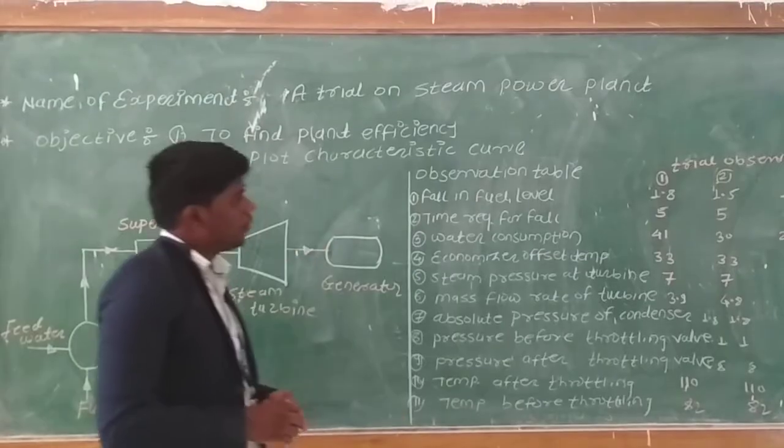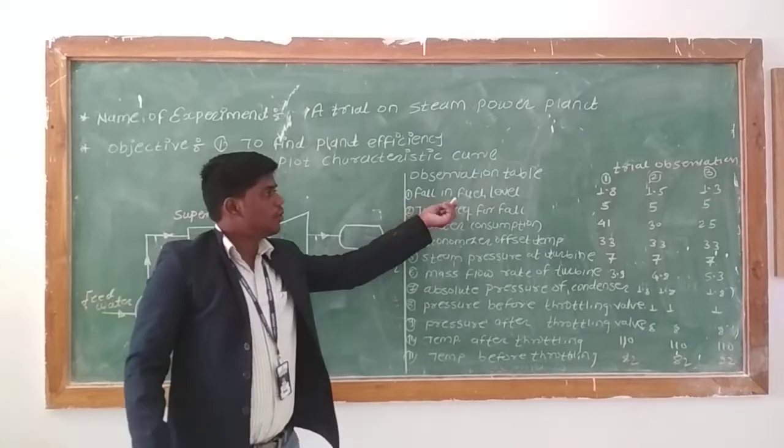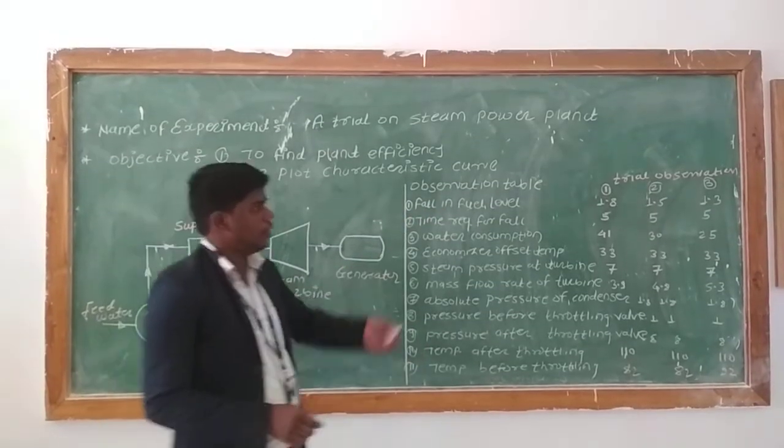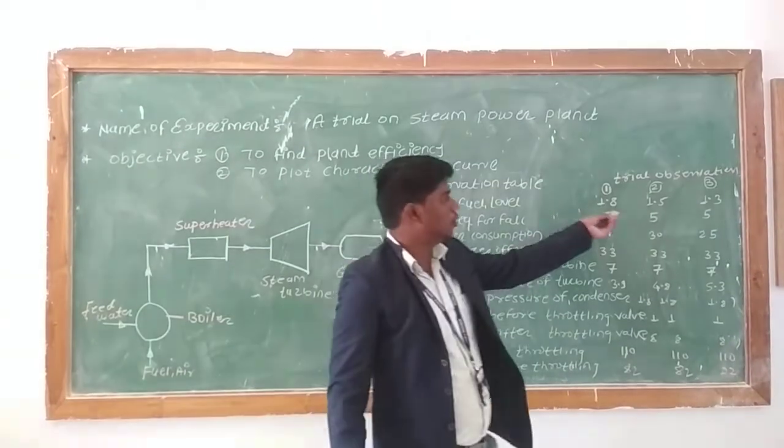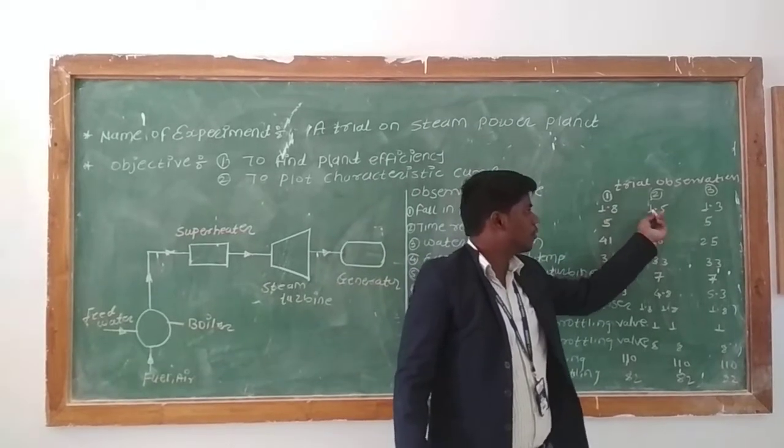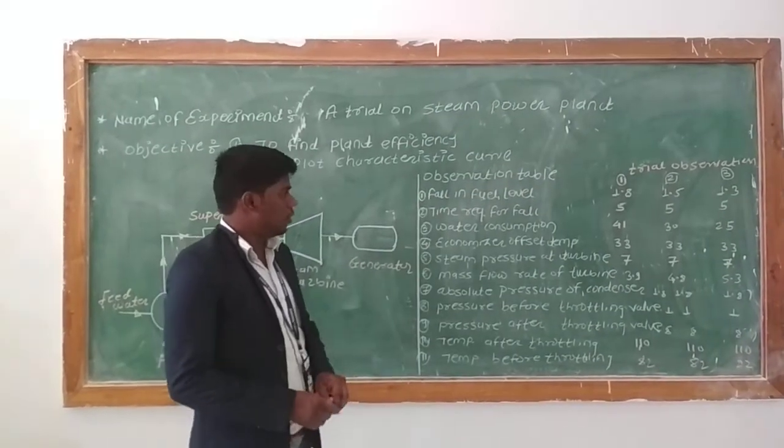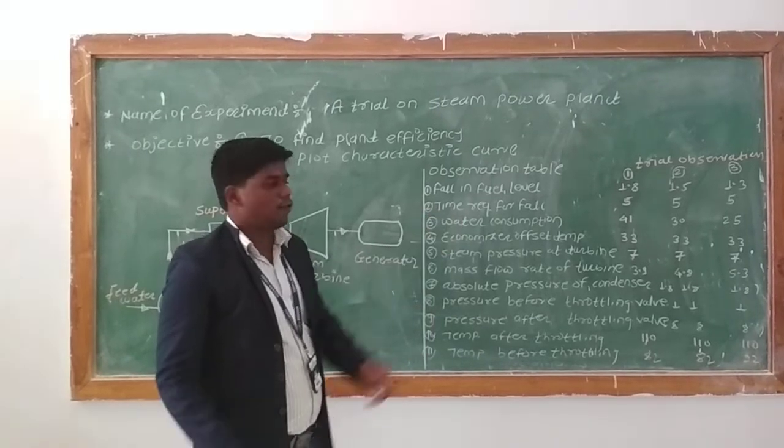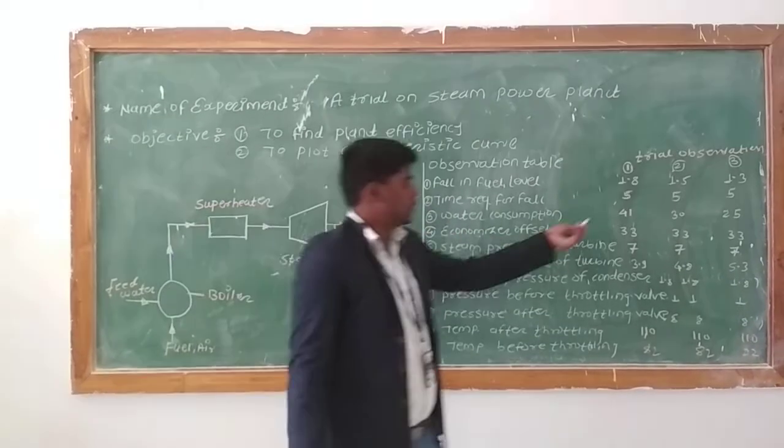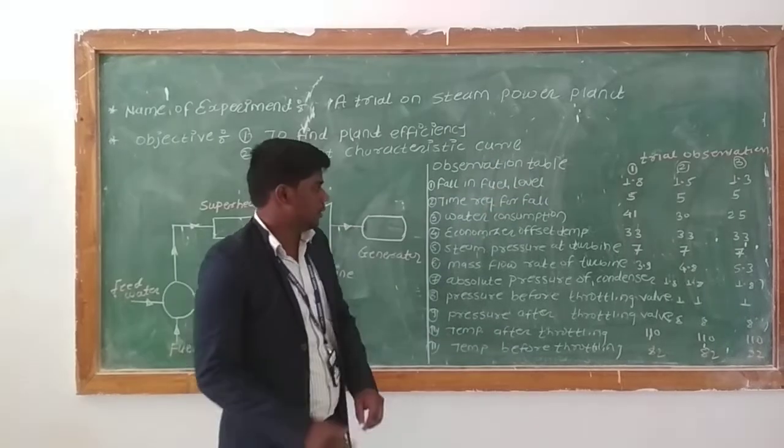Observation table for steam power plant. First, falling fuel level: the readings for different operations are 1.8, 2.1, 1.5, and 1.5. Second, time required for falling fuel level. These are the different observation readings.